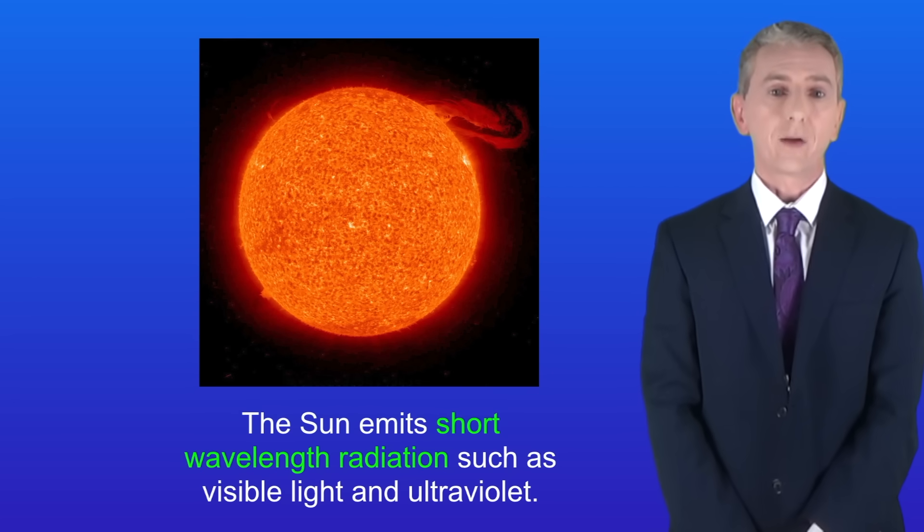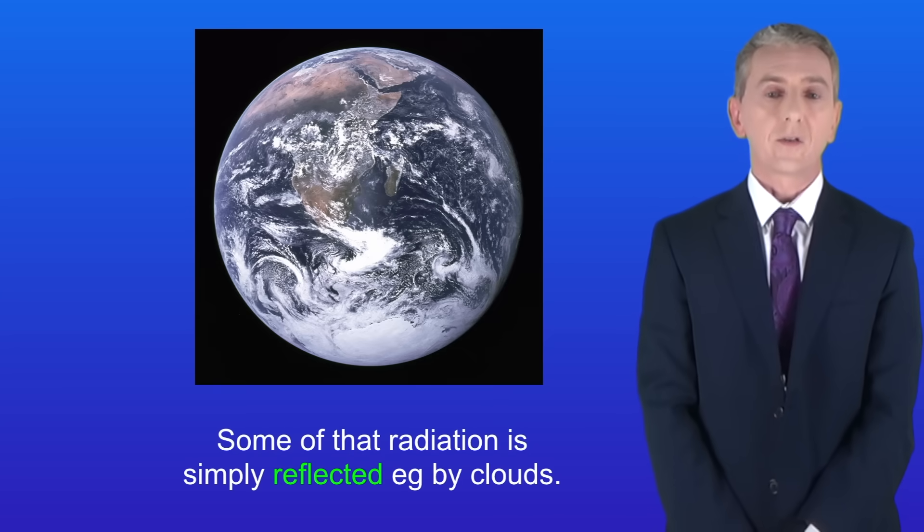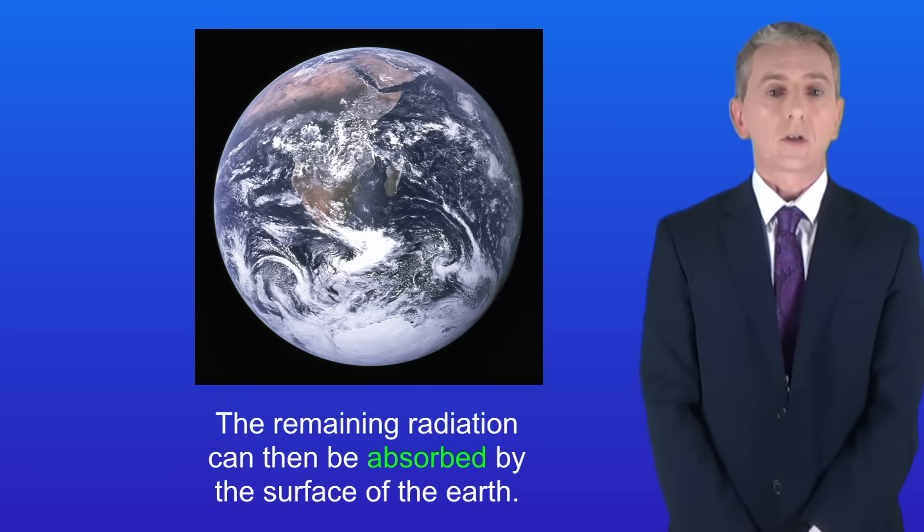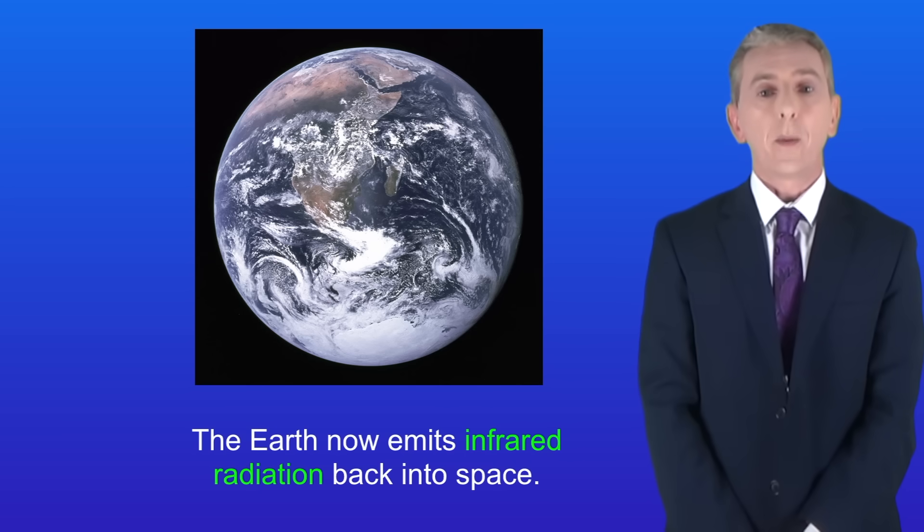The sun emits short wavelength radiation such as visible light and ultraviolet. This radiation travels to the earth. Some of that radiation is simply reflected, for example by clouds. The remaining radiation can then be absorbed by the surface of the earth. This causes the temperature of the earth to increase and the earth now emits infrared radiation back into space.